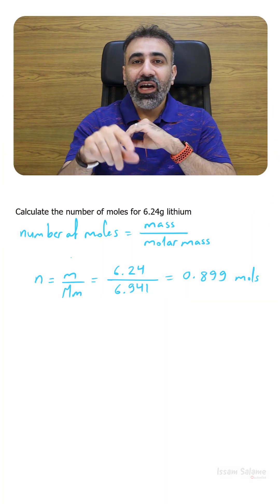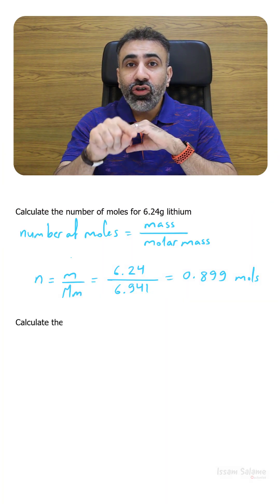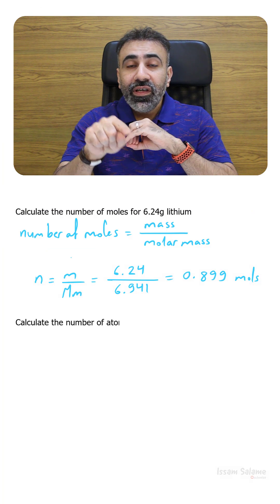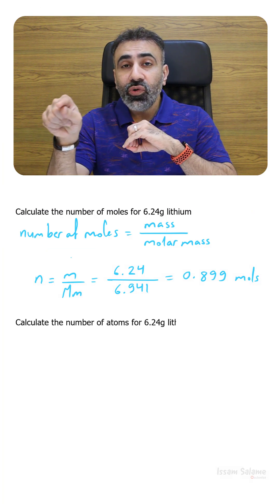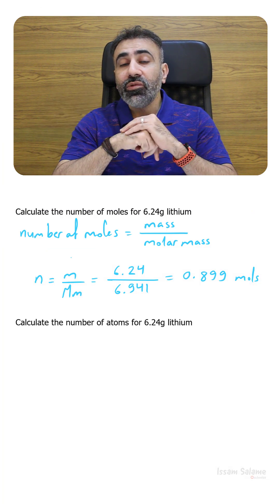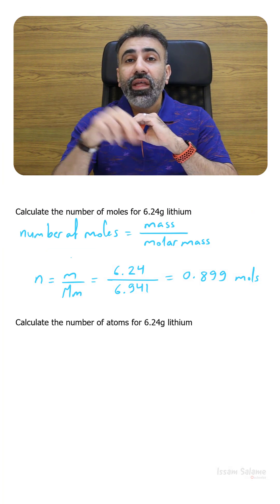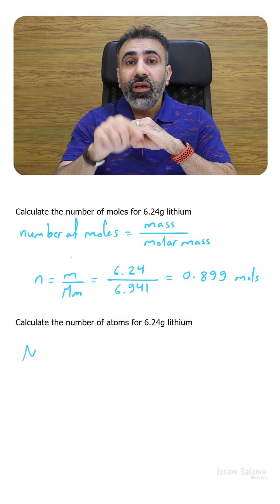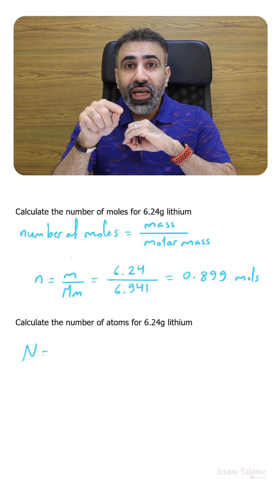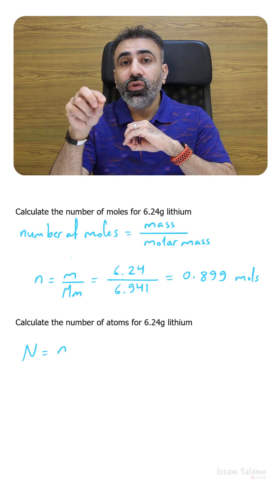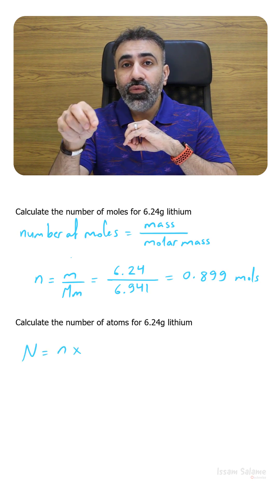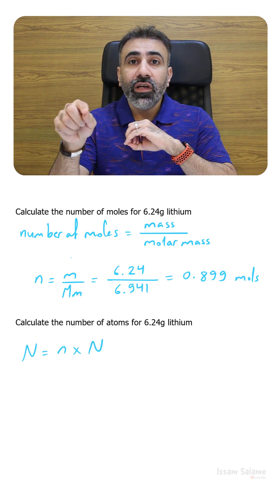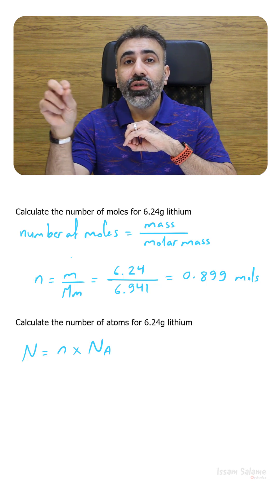Now if you want to calculate the number of atoms in 6.24 grams of lithium, we are going to use the formula: number of atoms is equal to N, the number of moles, multiplied by NA, which is Avogadro's number.